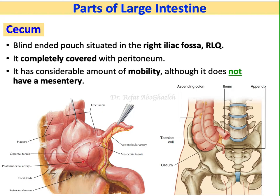Let us start with the cecum. This is the cecum — the most dilated or widest part of the large intestine. It is the first part of the large intestine and is a blind-ended pouch. It opens up to the ascending colon but inferiorly it is closed, like a sack, which is why it is called a blind-ended pouch.